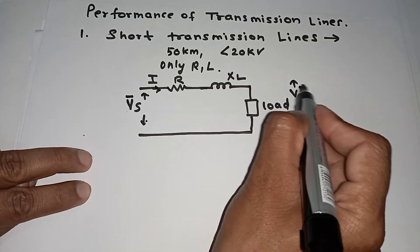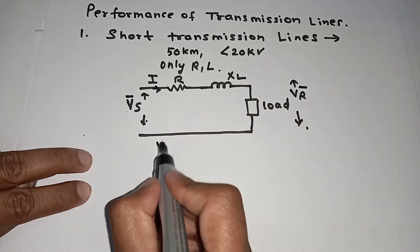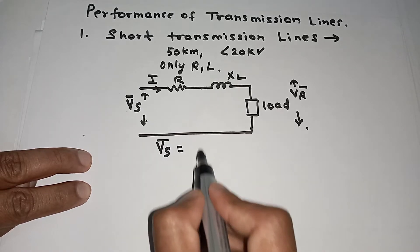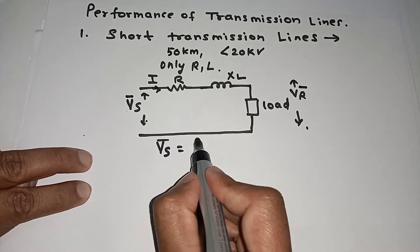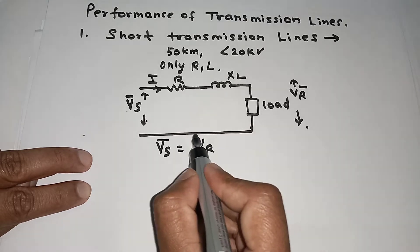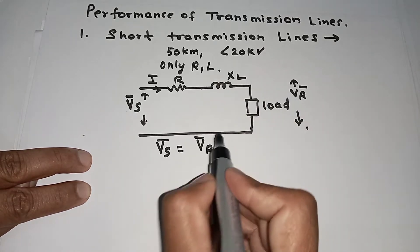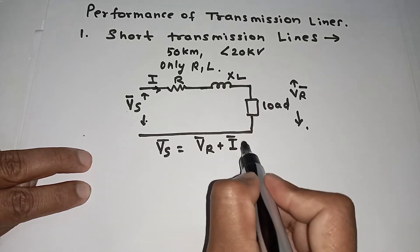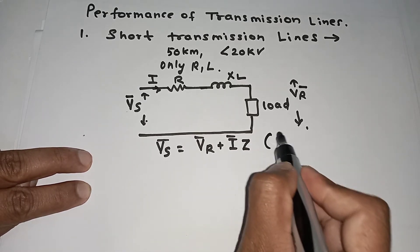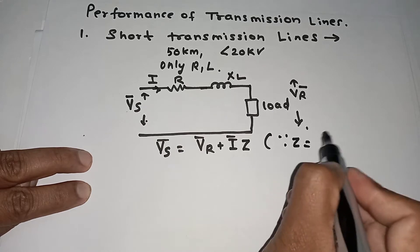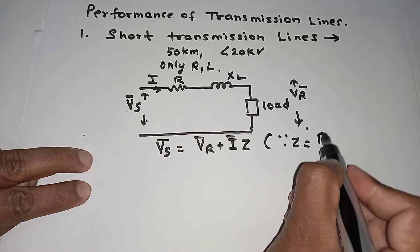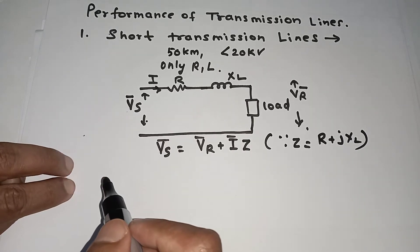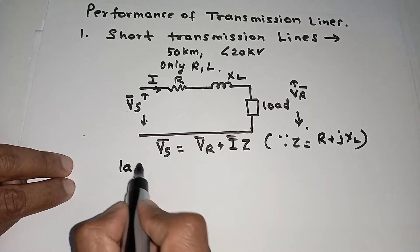We can write the voltage expression: the sending-end voltage VS is equal to the vector sum of the receiving-end voltage VR plus the line current I into Z, where Z is the combination of resistance and inductance. We suppose this is a lagging load.